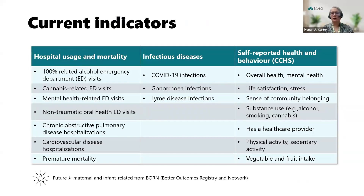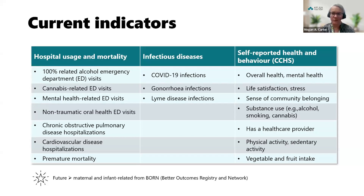We initially soft-launched SHED internally across the three health units with indicators on substance use, oral and mental health, emergency department visits, chronic disease hospitalizations, and premature mortality. Later, we added high-incidence infectious diseases from IFIS and CCM, and then self-reported and behavioral indicators from the CCHS, including overall health, mental health, life satisfaction, community belonging, substance use, access to a healthcare provider, physical and sedentary activity levels, and vegetable and fruit intake.